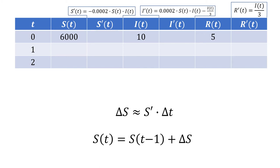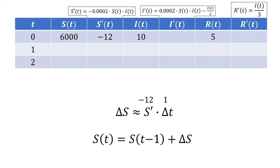Let's start filling out the table. We'll first compute the value of S'(t) using the differential equation. We'll multiply negative 0.0002 by the value of S and the value of I to get that S'(0) is negative 12 people per day. So the number of susceptible individuals is changing at a rate of negative 12 people per day for an entire day, meaning we should be losing 12 susceptible individuals. Since we're going from 0 to 1 day, the delta t is 1 day, and the rate at t=0 is negative 12 people per day, so delta S is approximately negative 12.